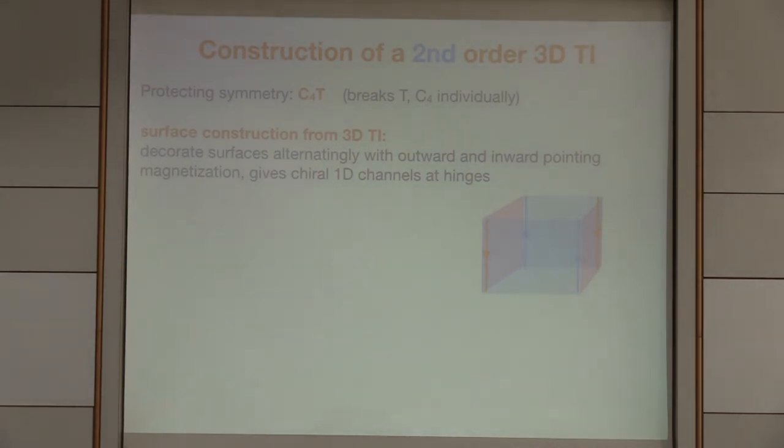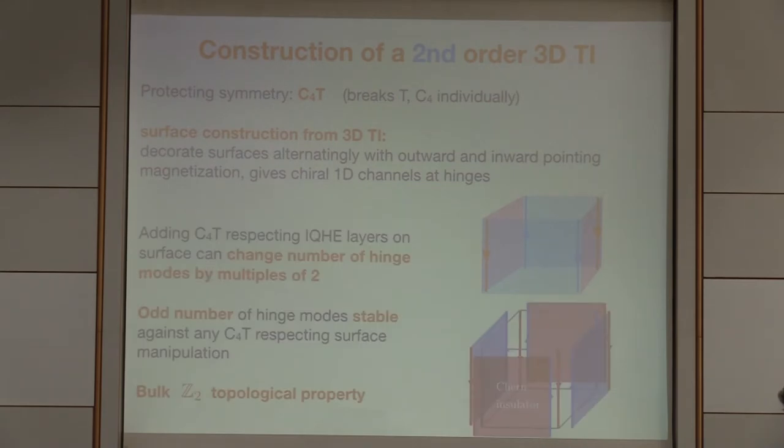This whole construction now is C4 times T invariant. If you rotate by 90 degrees and you flip the sign of the ferromagnetism, which is the T operation, you leave this structure invariant. Now I'd like to argue that this is a three-dimensional topological property of the material, even though I did some surface manipulation. I want to argue that having these hinge modes is a three-dimensional topological property protected by C4 times time reversal. To argue that, I could think about the simplest surface manipulation that I could do to the system and see whether I can get rid of these hinge modes. What is the simplest thing we can do to a TI surface? We can glue some integer quantum Hall effect to it. That's the minimal non-interacting system that I can build.